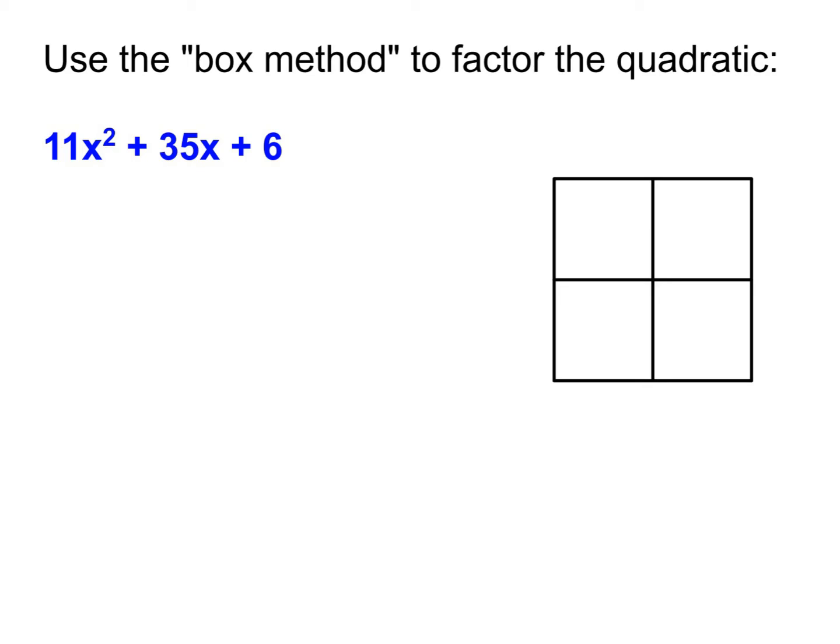Now it's time for us to start actually using it to factor. So please write down this quadratic and draw yourself a box that we'll be using. In order to factor this one, we're going to use the box method. Notice I have to use box method because I cannot divide the 11 out of every term. That's how we know to use box method. When setting up your box, we're going to put the first term in the top left square and the last term in the bottom right square.